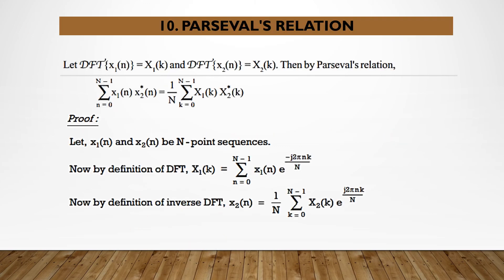The next property is Parseval's relation. Let DFT of x1(n) be X1(k) and DFT of x2(n) be X2(k). Then by Parseval's relation, sigma from n equal to 0 to N minus 1 of x1(n) x2*(n) equals 1 by N sigma from k equal to 0 to N minus 1 of X1(k) X2*(k).